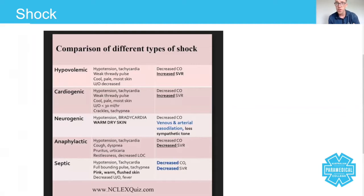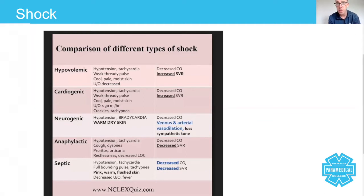Neurogenic shock is to do with the nervous system — take for example somebody who has had a road traffic collision and injured their nervous system. Anaphylactic shock, as you know, is caused by the mast cell: the mast cell degranulates and all the histamine, leukotrienes, and interleukins come out of the cell and cause massive swelling of the airway and the face.